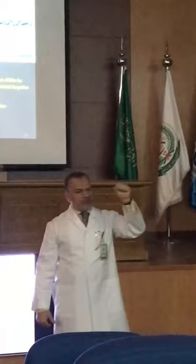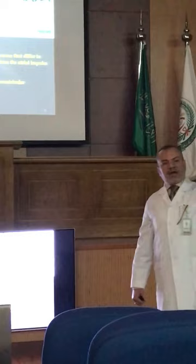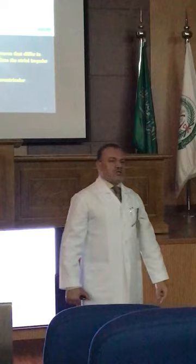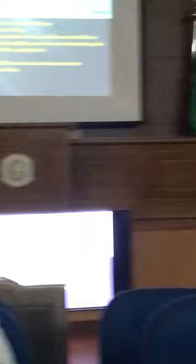Premature beats can come from anywhere: from the atrium, from the junction, or from the ventricle. So we have sinus rhythm with premature atrial contraction, sinus rhythm with premature junctional contraction, or sinus rhythm with premature ventricular contraction. They come early with different beat or QRS morphology and a compensatory pause behind.